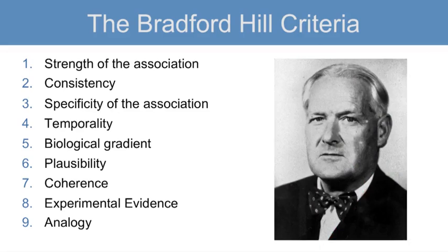Hill's criteria outline the minimal conditions needed to establish a causal relationship. These criteria were developed as a research tool for the medical field, but may also be used in other fields. Hill stated in 1965 that "the cause of illness may be immediate and direct. It may be remote and indirect, underlying the observed association." This is from the Environment and Disease: Association or Causation, in the Proceedings of the Royal Society of Medicine, May 1965.